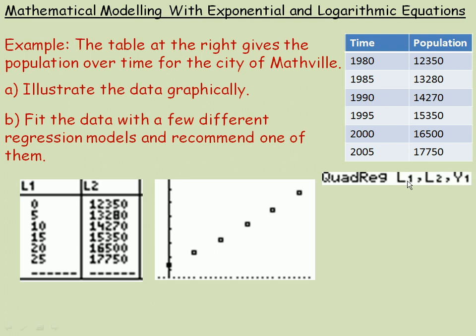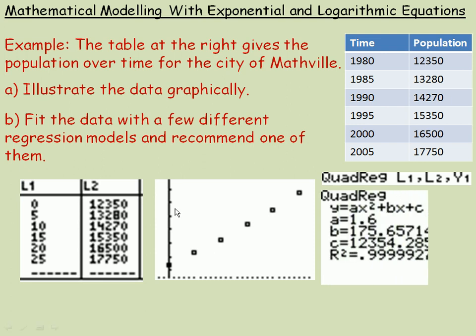So you type in, now it actually defaults to list one and list two. But if you type in list one comma list two, and I typed in comma also y one, then it'll actually graph, when I look at my graph, the line here or the curve that we're going to graph. If you enter in your calculator, this is what the calculator will come up and tell you.